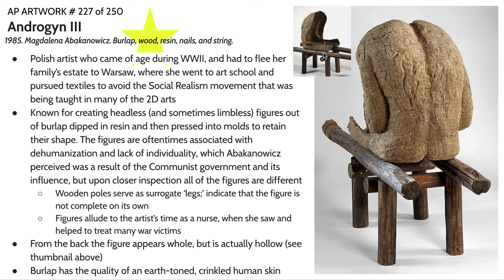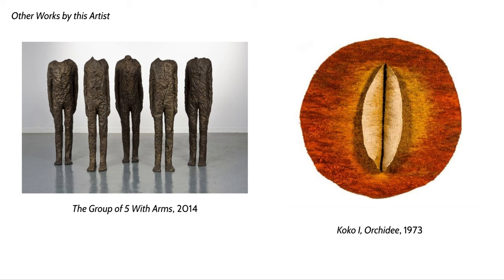When you look at the other side of the sculpture, you can see it's actually hollow rather than completely solid. It's one sheet of burlap dipped in resin pushed into a mold. The figures are often associated with the dehumanization and lack of individuality that Abakanowicz perceived as a result of the communist government. You'll often see groupings of similarly posed figures repeated several times, yet with slight variations in their silhouettes and the way the burlap was pushed into the mold, retaining a sense of individuality.